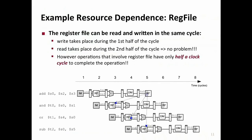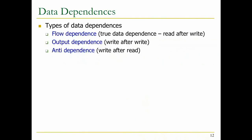For resource dependence, you need to ensure that the stage that writes and the stage that reads don't conflict with each other. One way of handling it is to ensure they access the register file at different parts of the cycle, or more creatively have two ports. There are three types of data dependencies, only one of which is really real. The real one is flow dependence - a true data dependence where an instruction needs a result after some other instruction writes that result. That's called read-after-write or RAW.